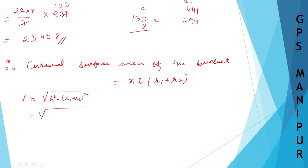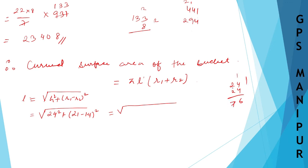Here h = 24, r1 = 21, r2 = 14. So l = √(24² + (21 − 14)²) = √(576 + 7²) = √(576 + 49) = √625 = 25. So the slant height l = 25 centimeters.